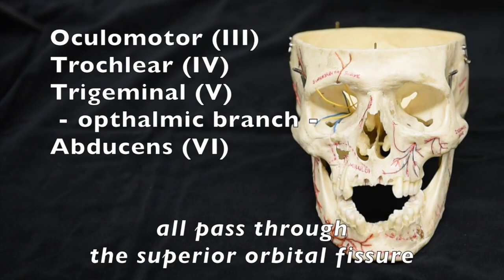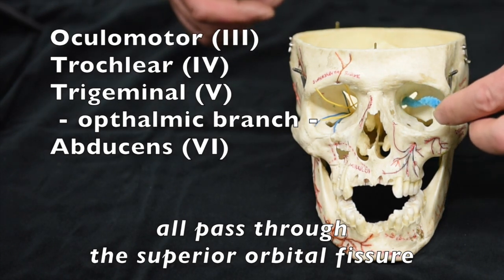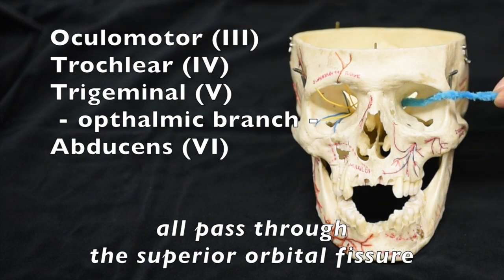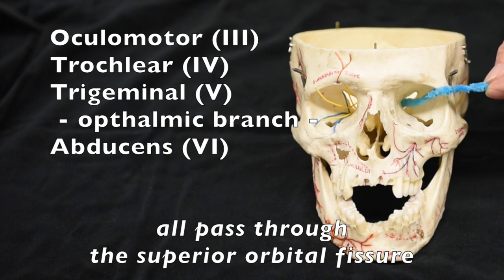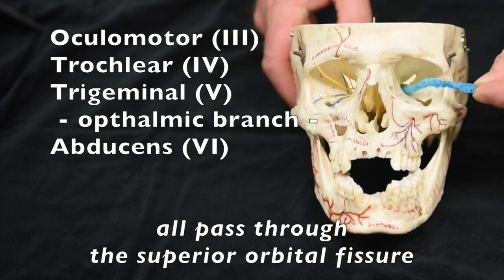Cranial nerves three, four, part of five, and six — that is the oculomotor, the trochlear, the ophthalmic branch of the trigeminal, and the abducens nerve — all travel through the superior orbital fissure.